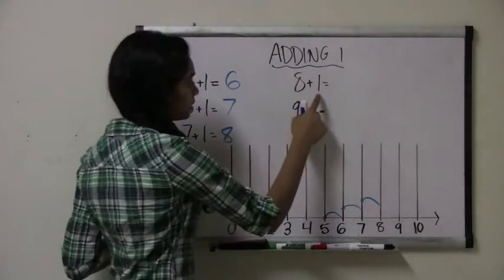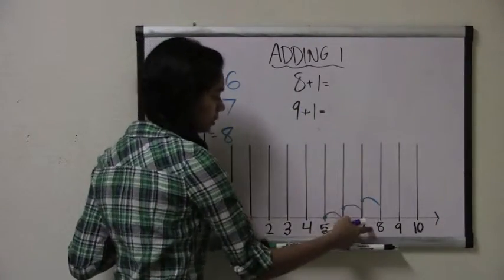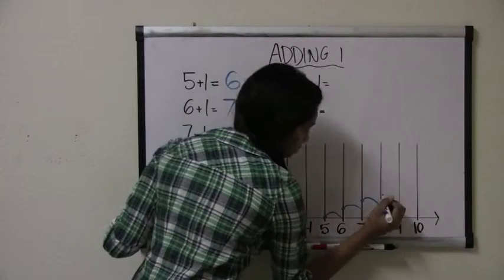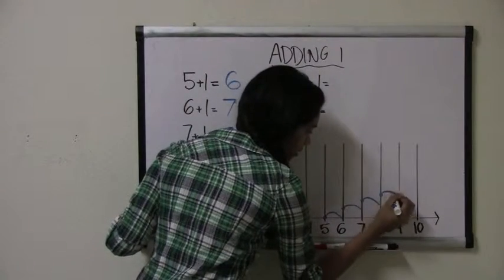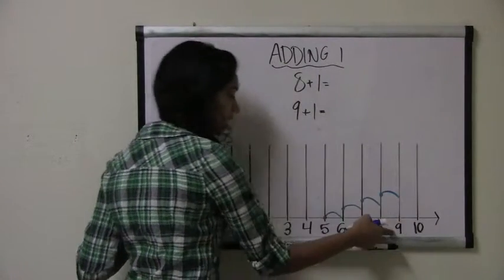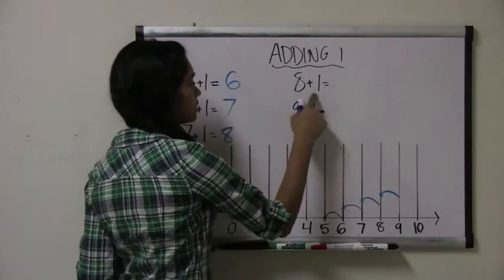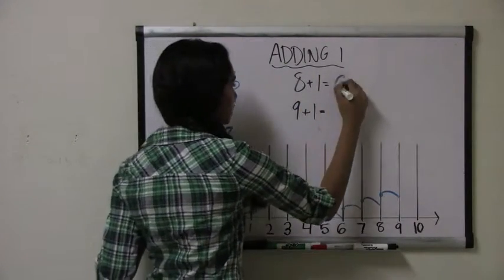Let's try 8 plus 1. So we start with the number 8 and jump one spot to the number 9. So 8 plus 1 equals 9.